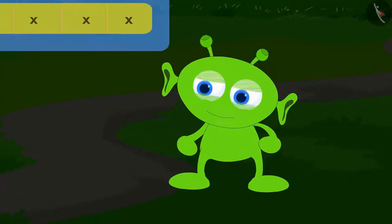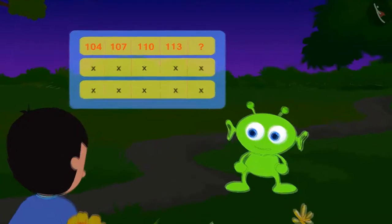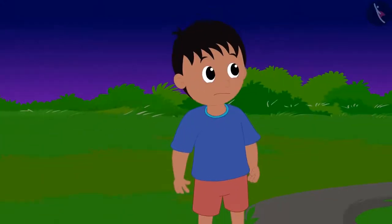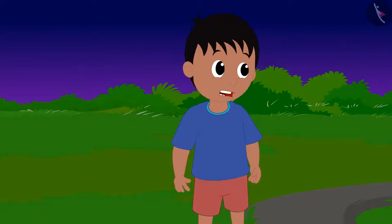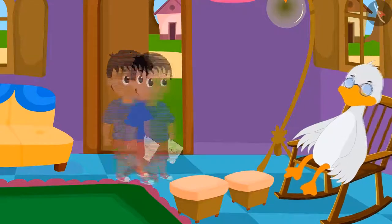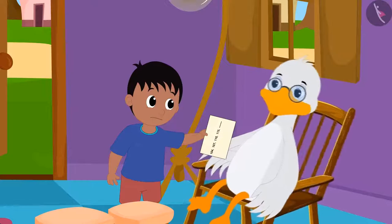The alien from the flying saucer said to Raju, This is my first code. This is a strange code. Raju wrote the code on a paper and ran fast to Big Mouth Duck Uncle in search of the answer.